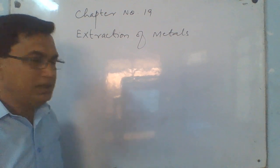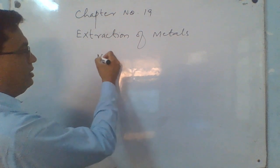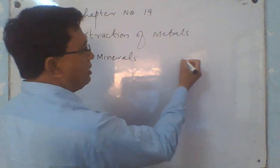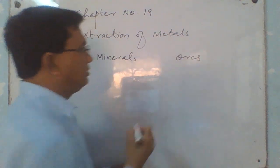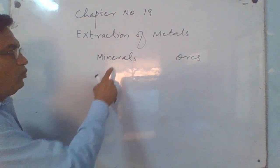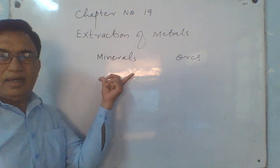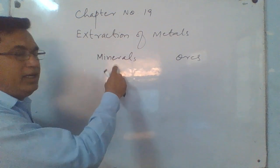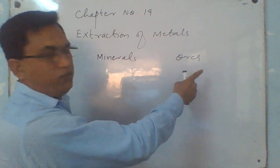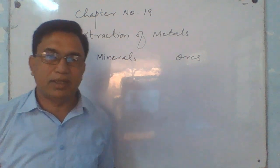There are two terms used in this connection. One is called mineral and the second is called ores. Minerals are those chemical compounds from which metals can't be extracted economically, but ores are a concentrated form of minerals from which metals can be extracted quite easily.